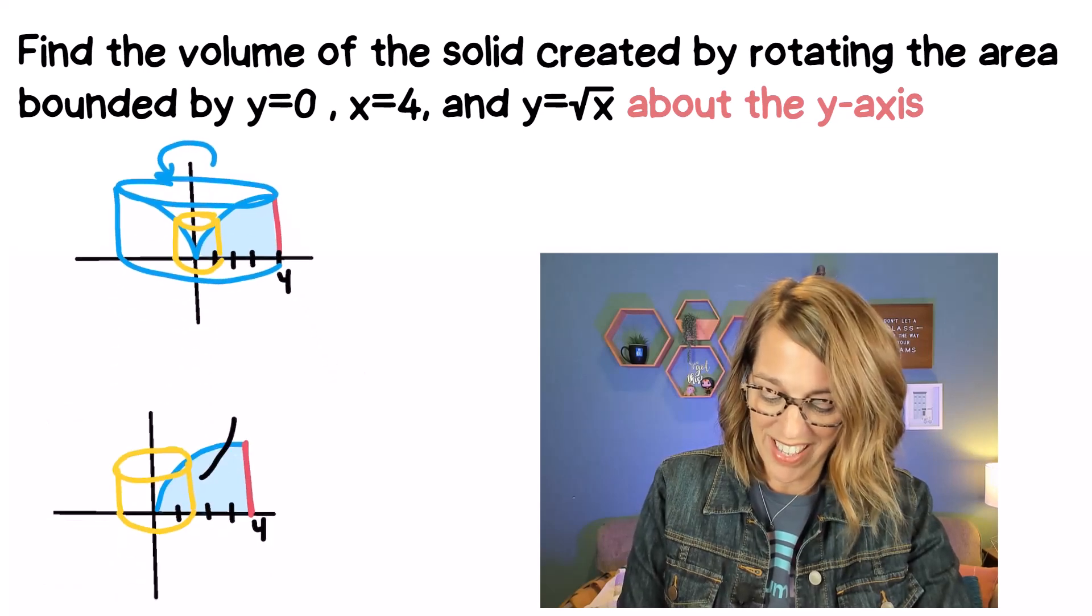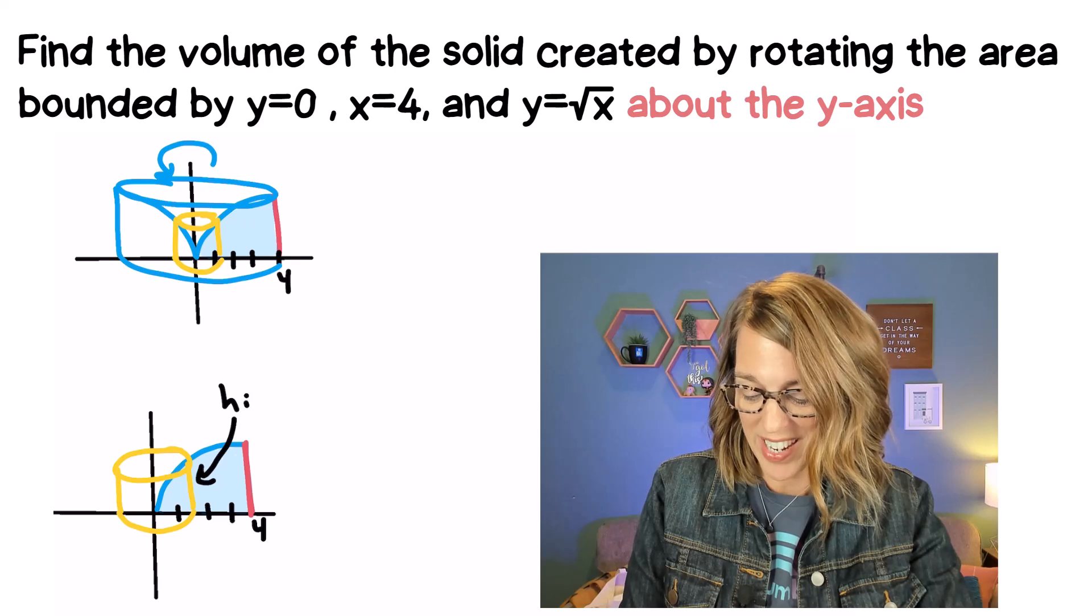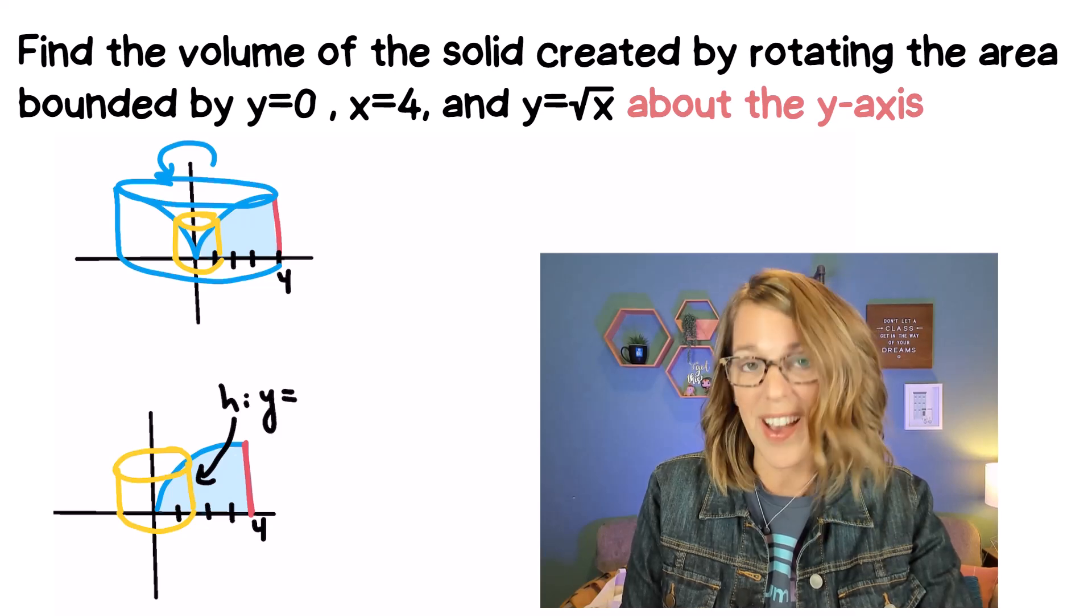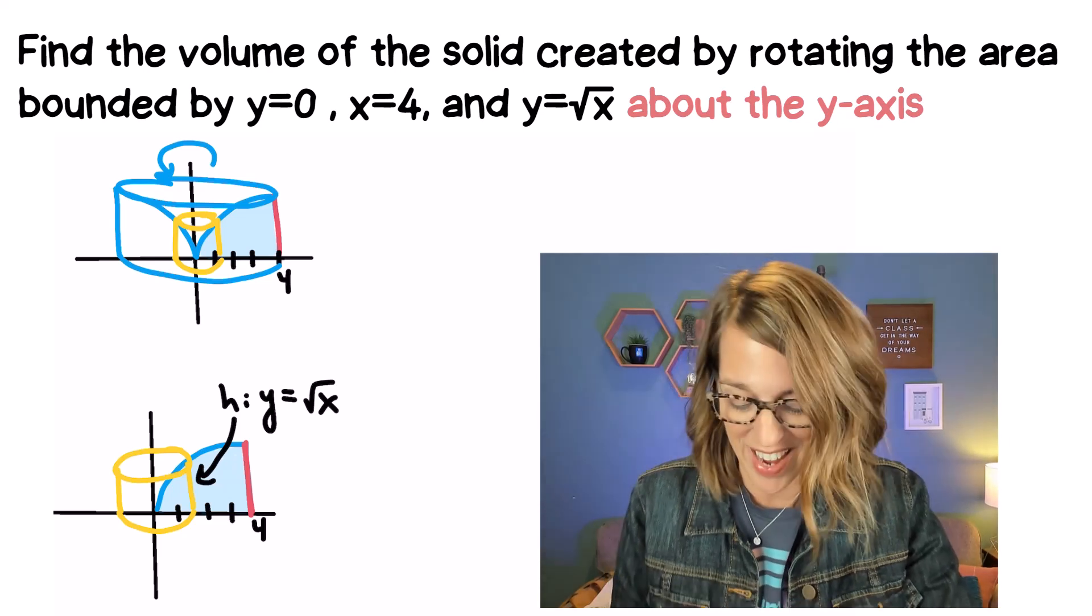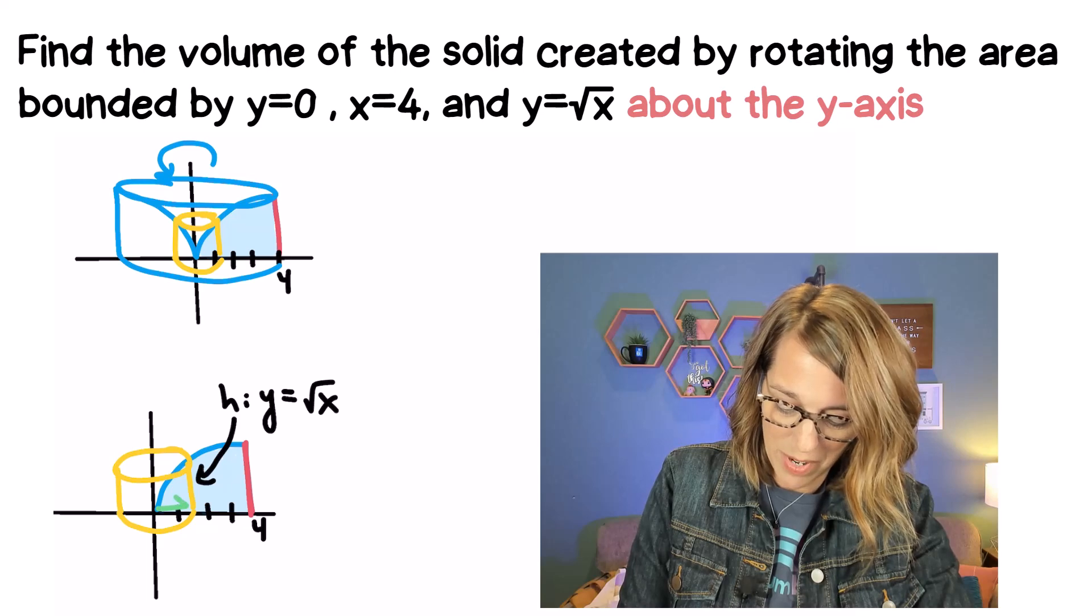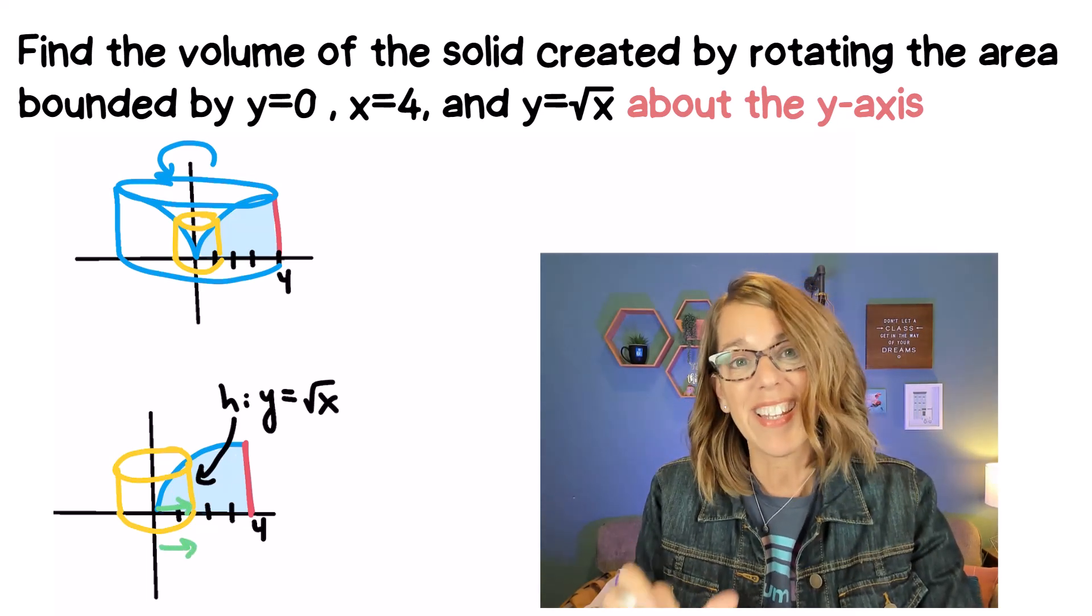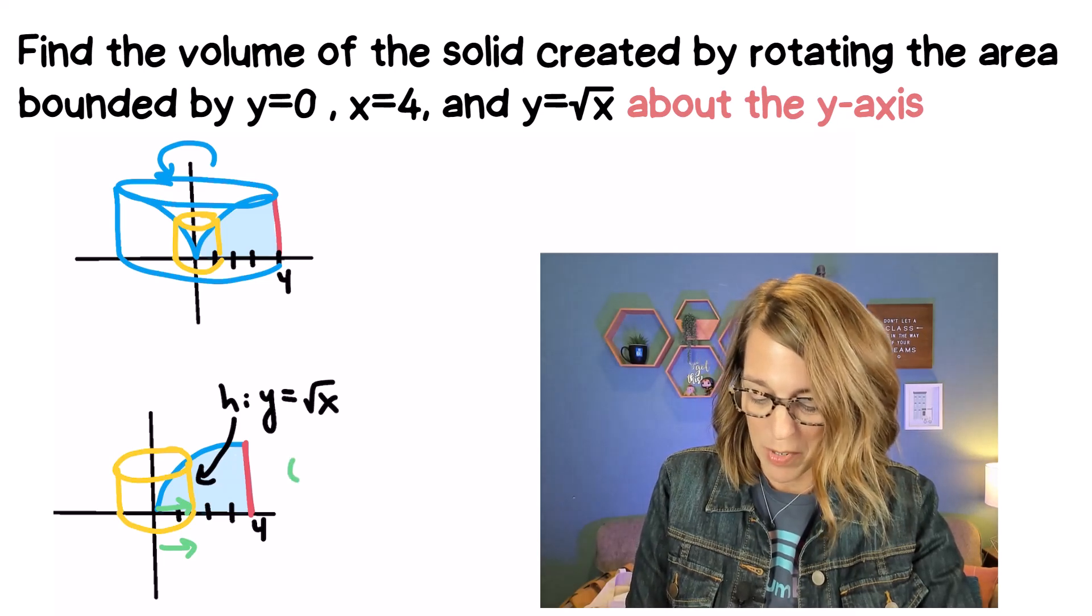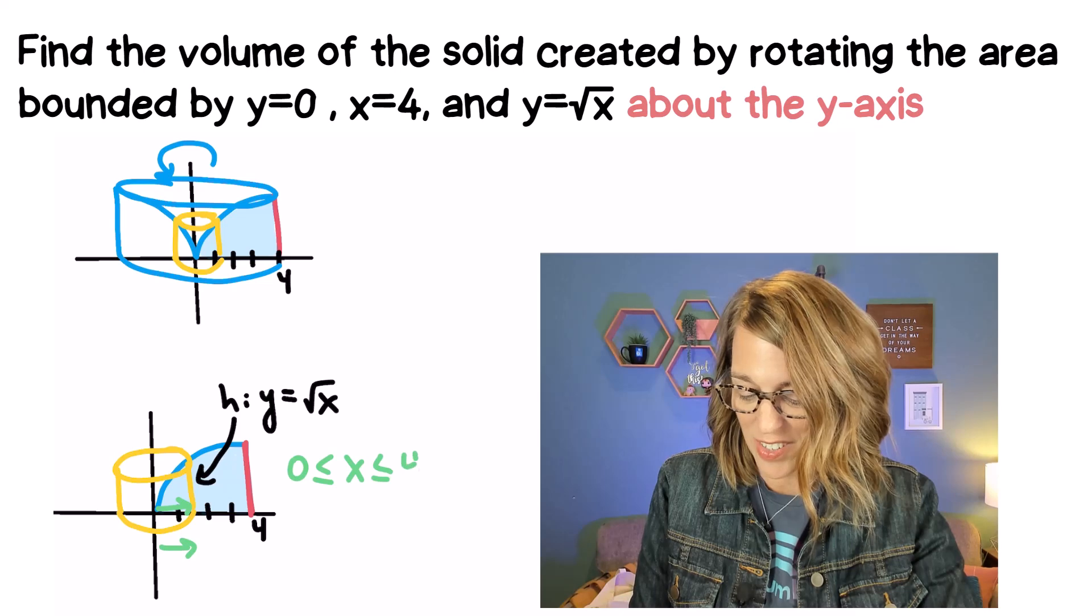From this picture you can see that that height is really in the y direction, so my height is in the y direction and it goes up to that curve which is the square root of x. And my radius, the radius is going to be right here, let me pull it down a little bit right here, that's going to be in the x direction and it's going to be between 0 and 4 in the x direction.